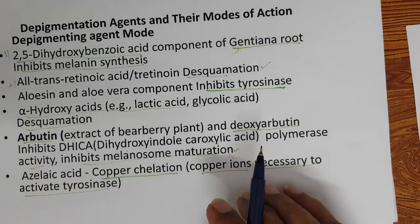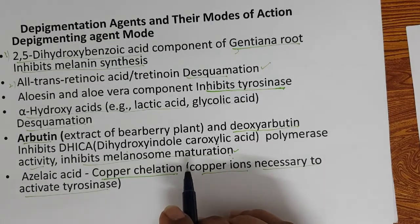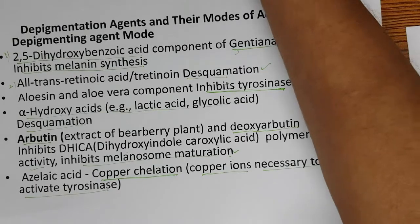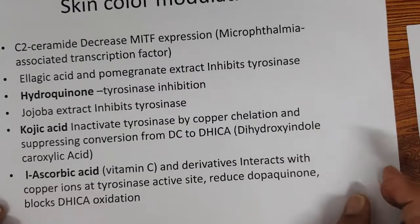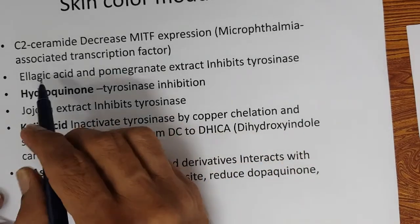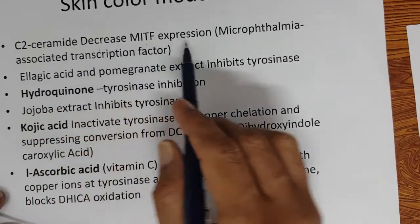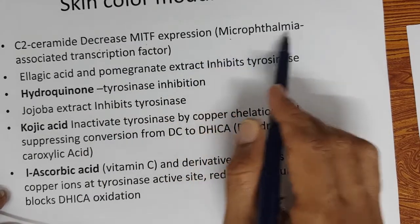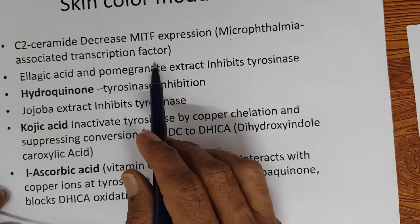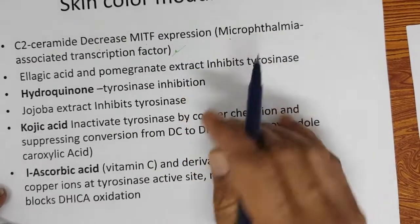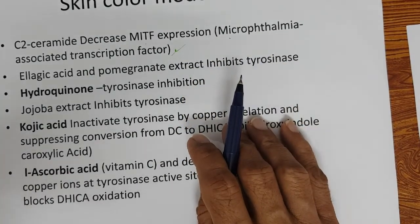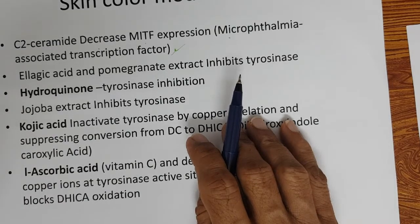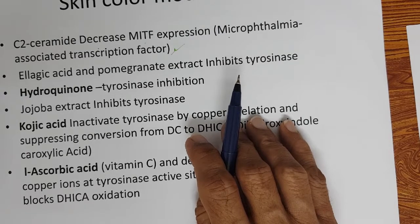Copper ions are necessary to activate tyrosinase. The mechanisms are complex, but azelaic acid works by copper chelation to reduce tyrosinase enzyme activity. C2 ceramides decrease MITF expression — microphthalmia-associated transcription factor. If MITF is activated it has a role in melanoma, which is overproduction of melanin and can lead to a cancerous form.